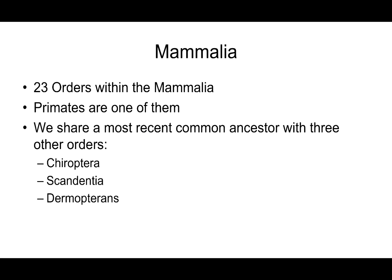Now let's focus within the placental mammals. Within placental mammals there are 23 Linnaean orders. The closest relatives to the primates among those 23 orders — the mammalian groups with which we share a more recent common ancestor — might be a little surprising. It's the Chiroptera, Scandentia, and the Dermopterans.